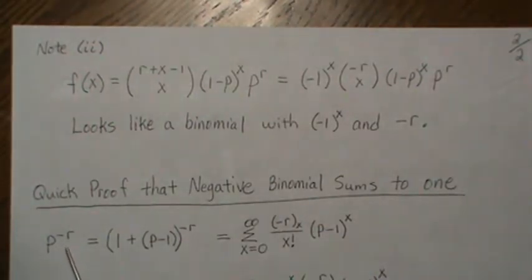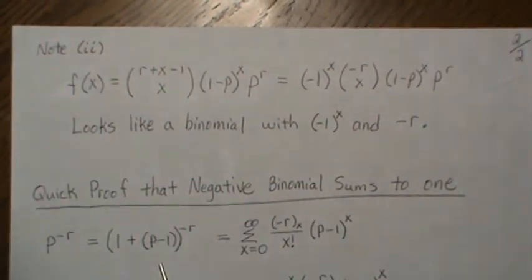So here, p to the minus r can be written like this. So it's one plus p minus one. Where the ones cancel and we're left with p. But this looks like that binomial series, and we just showed that it can be written like this.